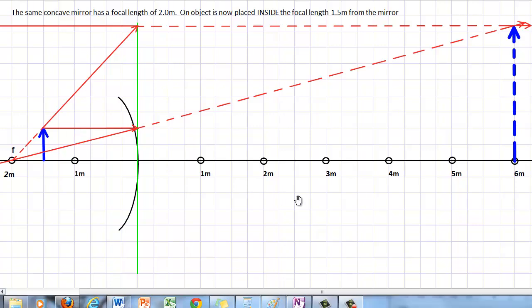So DI, it looks like, is 6. And because it's a virtual image, it would be negative 6. It's on the virtual side of the mirror. And the height of our image is about 4 times bigger than the object. So our object was 2 units high. This is 1, 2, 3, 4 times bigger than that, give or take.